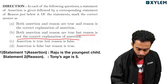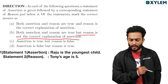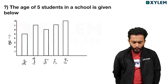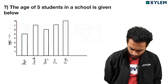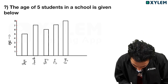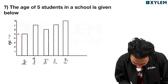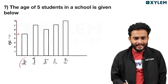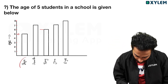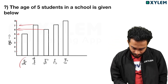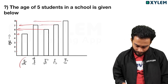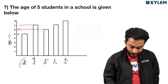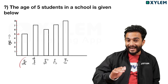Question 1 — Assertion: Raju is the youngest child. Looking at the bar graph, Raju is the youngest child. The age shown for Raju is approximately 8 or 9 years.